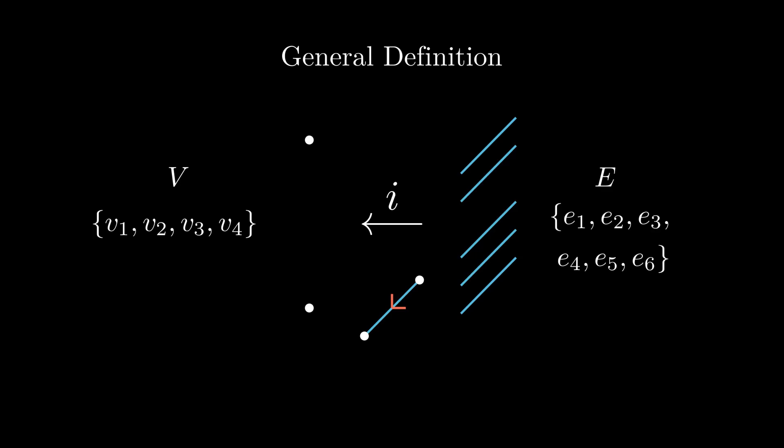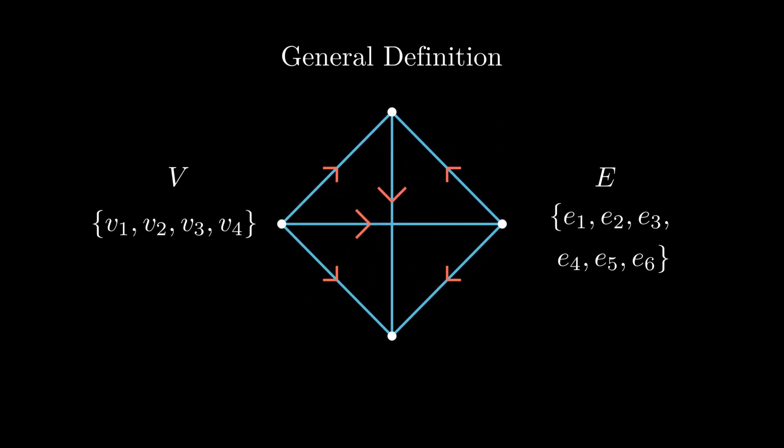Doing this for every edge gives us a graph, but it's directed. And we kind of want to ignore this direction, but we have to be rigorous about it. So let's just focus on one edge.